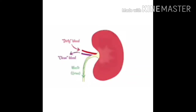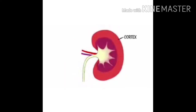If we look at the cross section of the kidney, the outermost part is known as the cortex, the next part is the medulla, and then there is the pelvis. The artery that supplies it is known as the renal artery. Renal is simply an adjective which describes things related to the kidney.